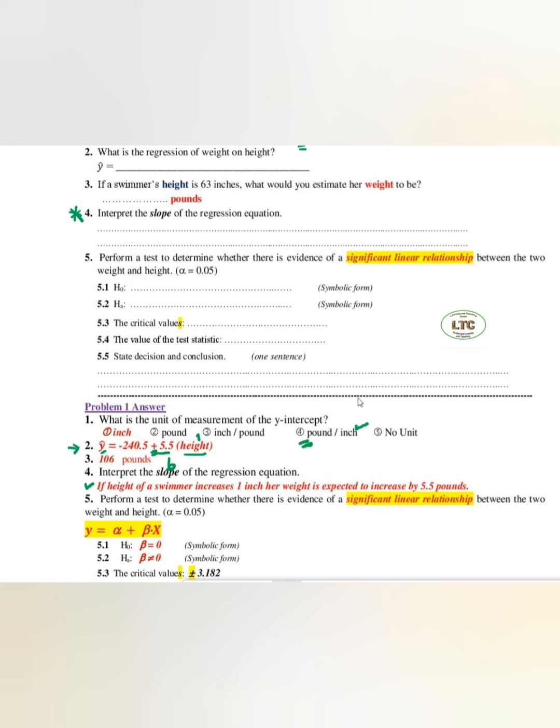And if the height is 63 inches, enter 63 and compute: negative 240.5 plus 5.5 times 63 equals 106 pounds.